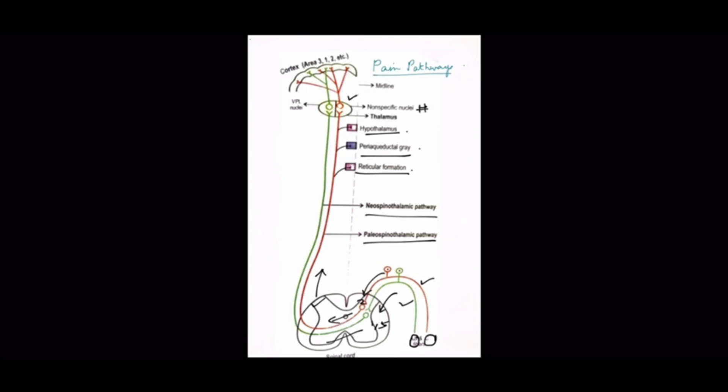Second order neurons cross over to the opposite side at the same segment of the spinal cord and ascend in the lateral spinothalamic tract. In the spinal cord, there is topographic organization of fibers. Fibers from lower body parts are placed laterally and fibers from upper body parts are located more medially. Third order neurons originate from specific thalamic nuclei and project to the post-central gyrus, that is the sensory cortex.